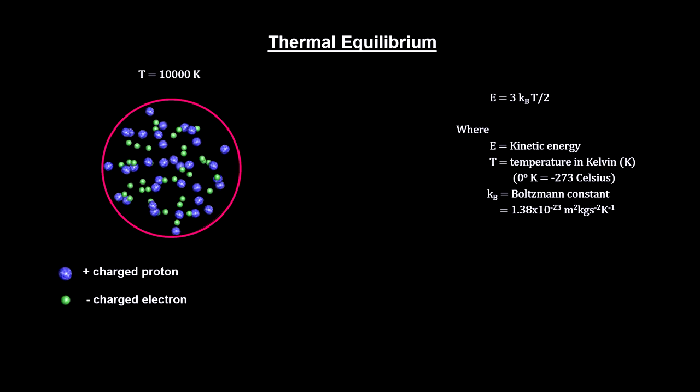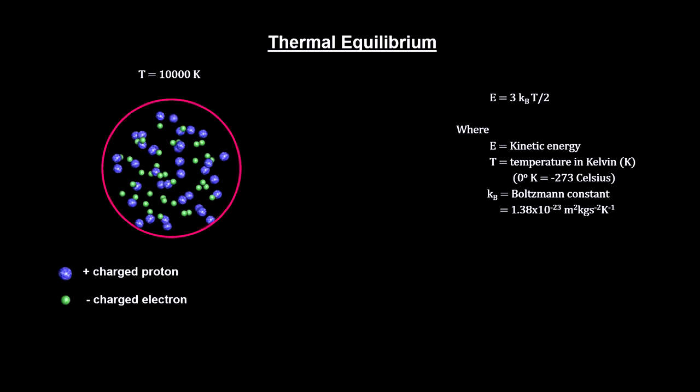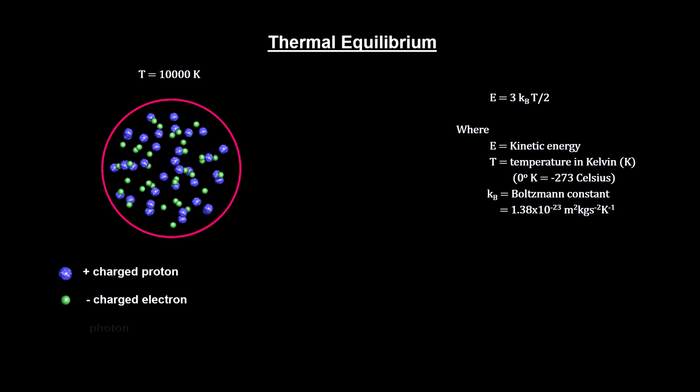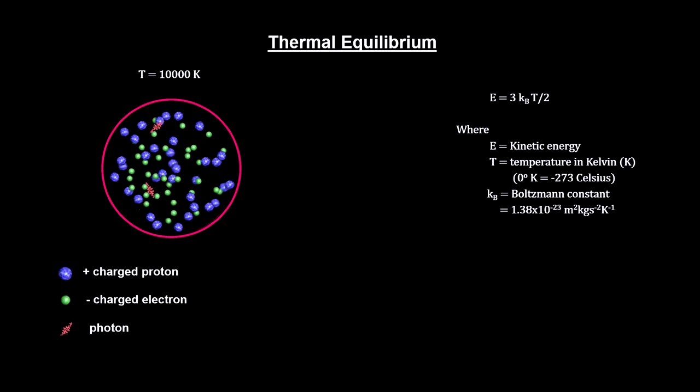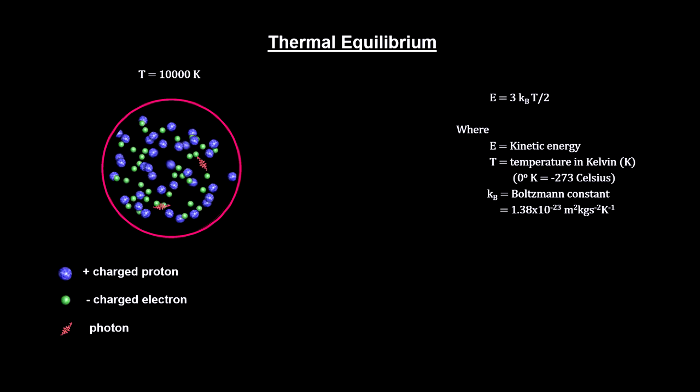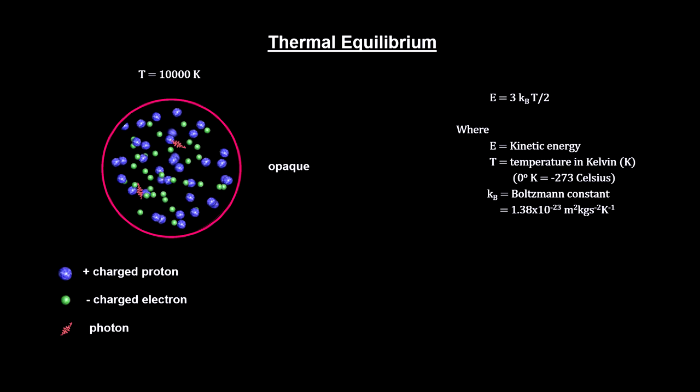At 10,000 degrees, the electrons and protons are too hot to combine into hydrogen. If we add photons, they will scatter off the charged particles. Light cannot travel far through this space because it is constantly interacting with these free-moving charged particles. The plasma is opaque.